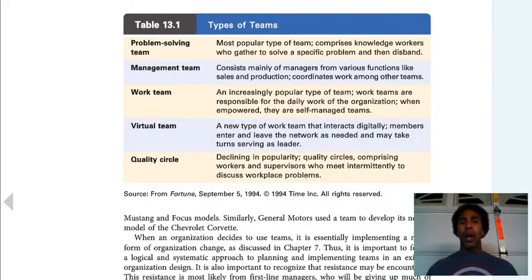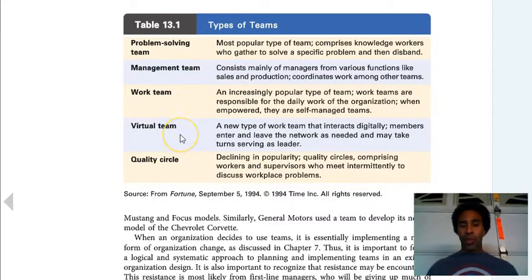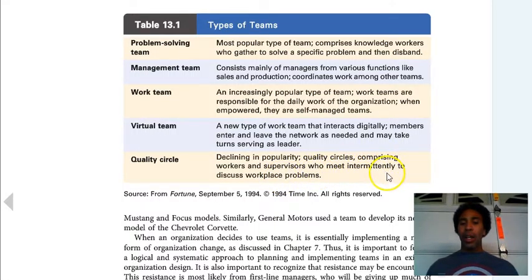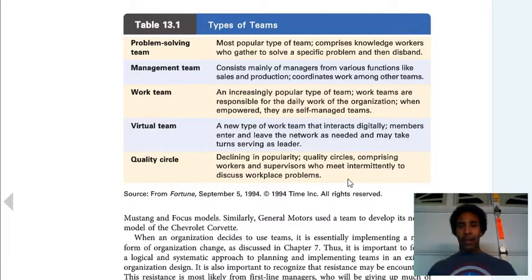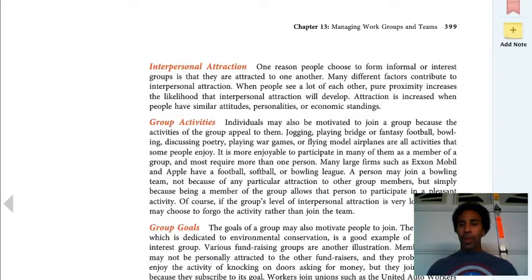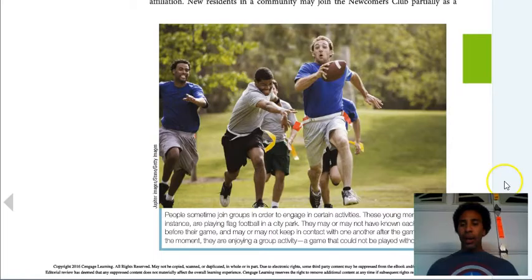These are the different types of teams. Make sure you read what type of team they are and then read the definition. They have problem-solving teams — the most popular type, asked to solve a problem with a task at hand. They have a management team, work team, virtual team, and a quality circle. Quality circles are declining in popularity — comprising workers and supervisors who meet intermittently to discuss workplace problems. This could be like a safety committee where we met and discussed issues like unauthorized microwaves and heaters without proper switches.